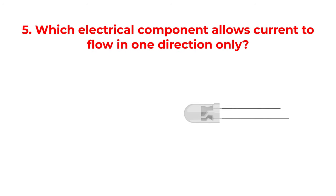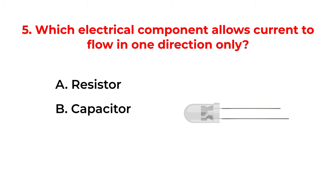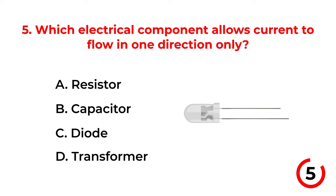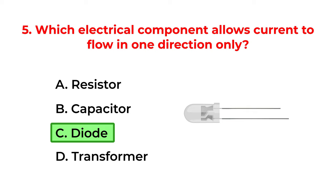Which electrical component allows current to flow in one direction only? A. Resistor. B. Capacitor. C. Diode. D. Transformer. The correct answer is option C: Diode.